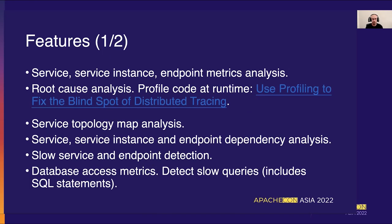Skywalking has many features, like metric analysis for service, service instance, and endpoints. You can do root cause analysis by profiling your code at runtime. You can have a service topology map which will show you all your services that are being observed, as well as service, service instance, and endpoint dependency analysis. Based on those analyses, you can detect slow services and slow endpoints.